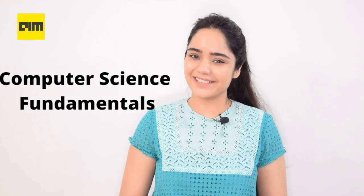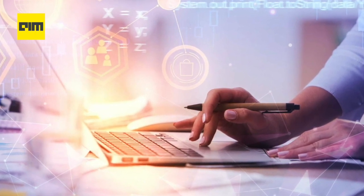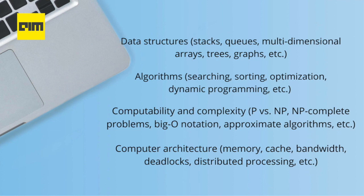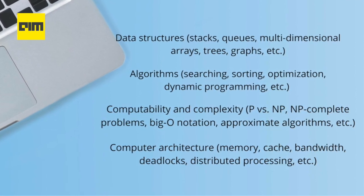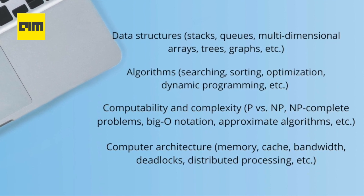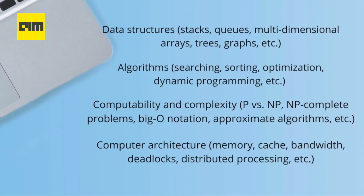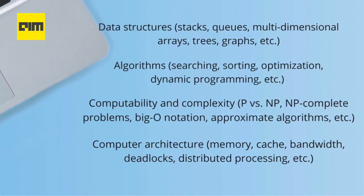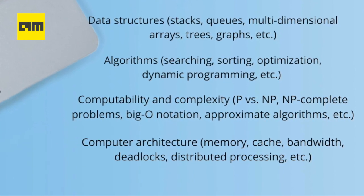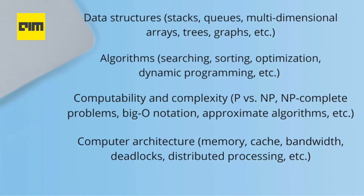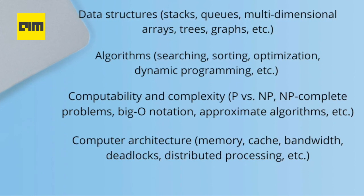Moving on: computer science fundamentals are very important for machine learning engineers, including data structures such as stacks, queues, multi-dimensional arrays, trees, graphs, etc.; algorithms covering searching, sorting, optimization, dynamic programming, etc.; computability and complexity including P vs NP, NP-complete problems, big O notation, approximate algorithms, etc.; and computer architecture covering memory, cache, bandwidth, deadlocks, distributed processing, etc.